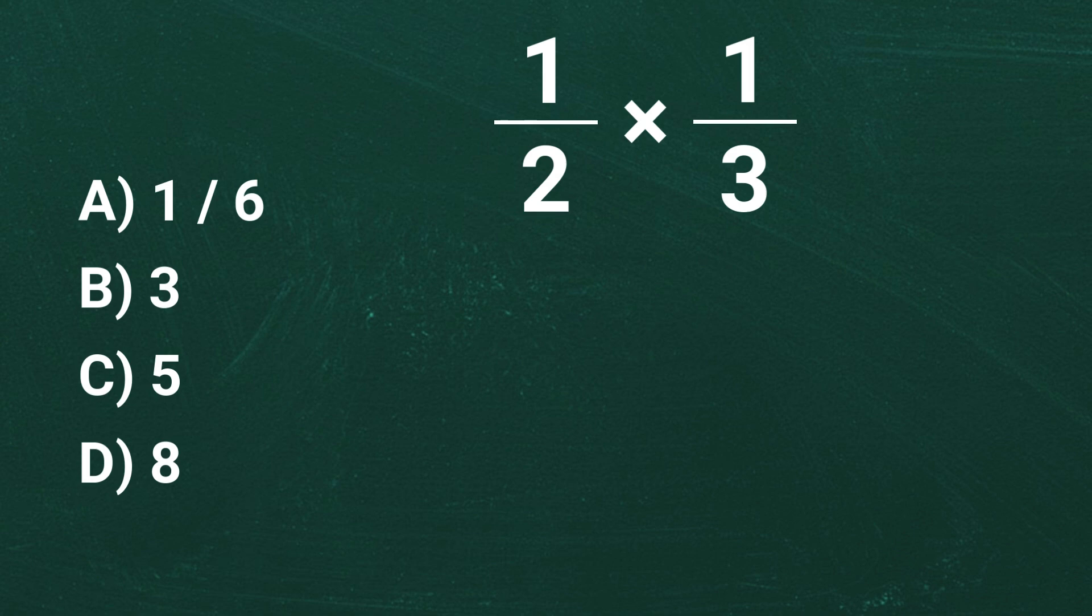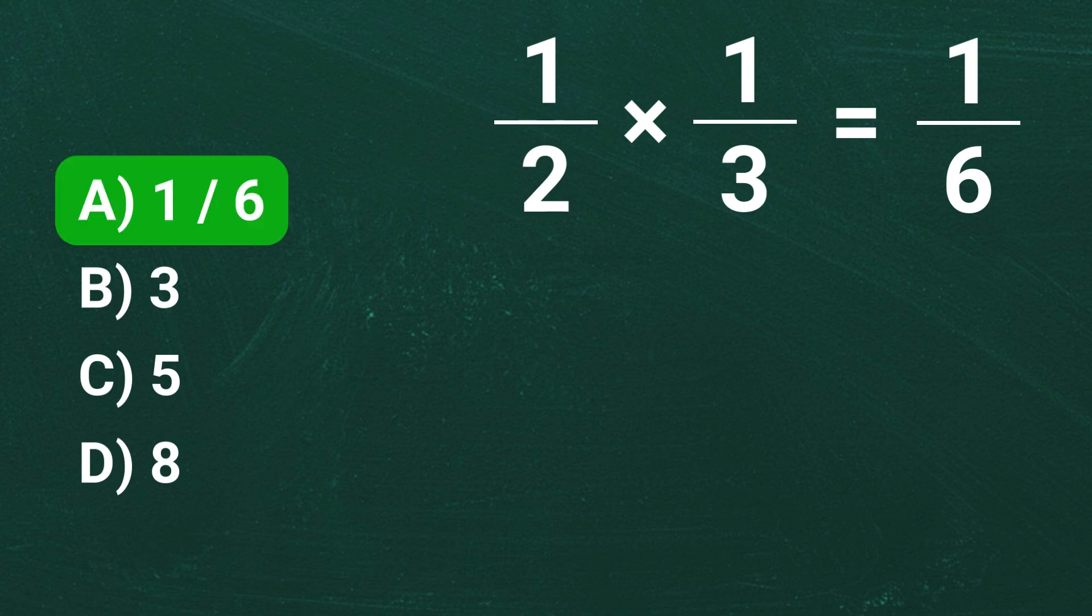Multiplying the numerators, 1 times 1 is equal to 1. Multiplying the denominators, 2 times 3 is equal to 6. So the simplified result is 1 over 6. And there you have it. The correct answer is A, 1 over 6.